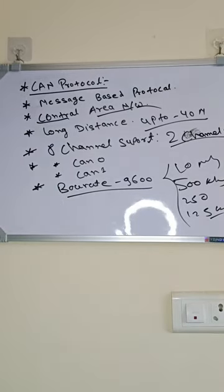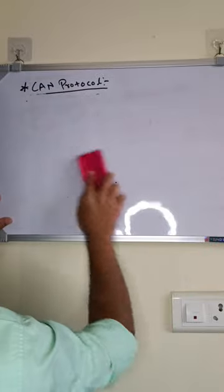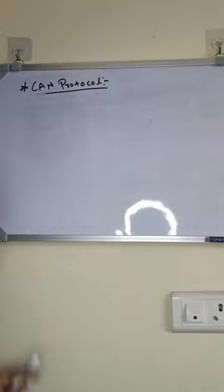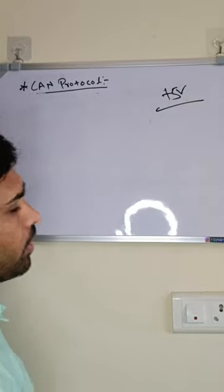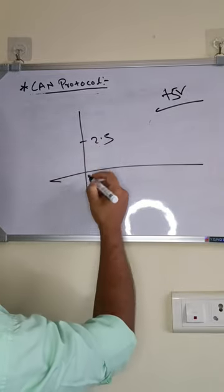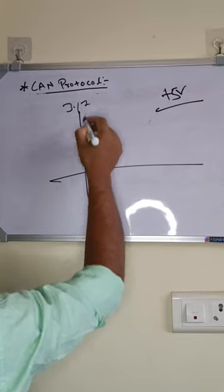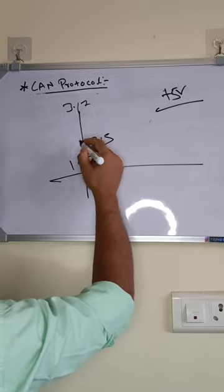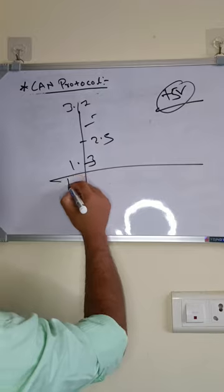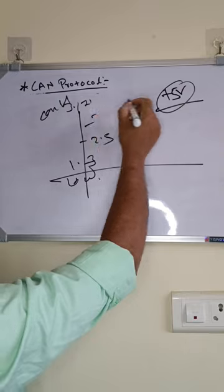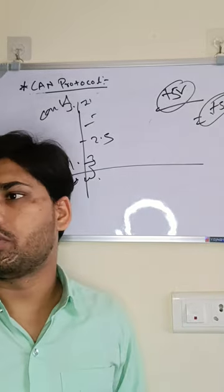CAN takes a total voltage of 5 volts. The base voltage is 2.5V; CAN High goes up to 3.7V and CAN Low goes down to 1.3V. When you add CAN Low and CAN High together, the total comes to 5 volts. So in CAN we can transfer up to 5 volts only.